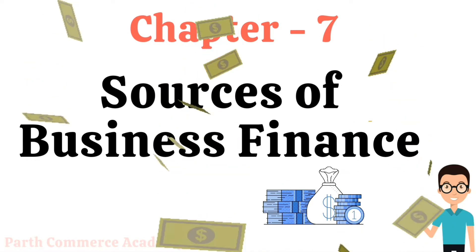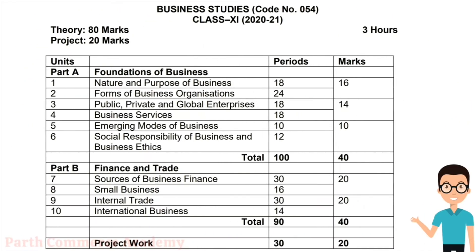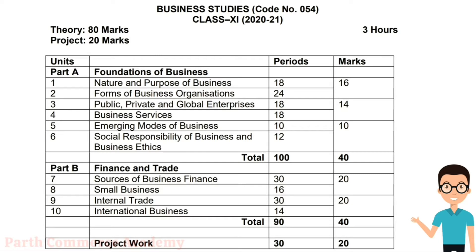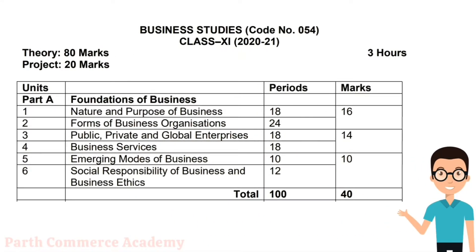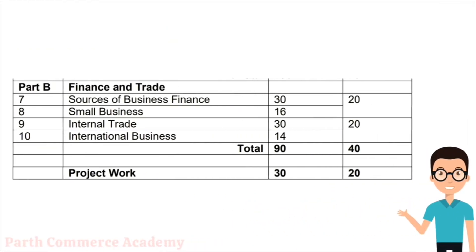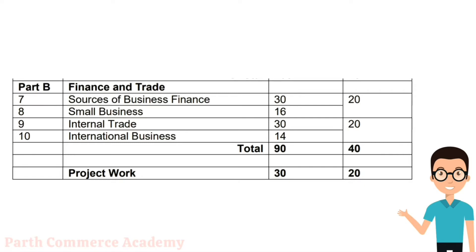Class 11th Syllabus of Business Studies is divided into two parts, Part A and Part B. In Part A, total six chapters are there which explain the foundation of business — like the nature of business, different forms of business in private sector as well as in public sector, different types of business services, different modes of business, and social responsibility of business. Now we are starting the second part, whose name is Finance and Trade, and its first chapter is Sources of Business Finance.